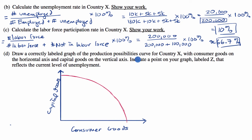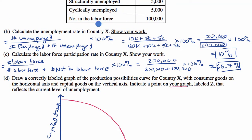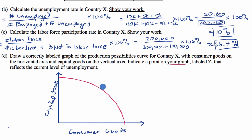They say indicate a point on your graph labeled Z that reflects the current level of unemployment. You might think you need to put it on the curve, but that would not be the case here — because we have some level of cyclical unemployment. We are producing below our potential, so that means we would be behind the production possibilities curve. Point Z should be placed somewhere behind the curve, and anywhere behind the curve would suffice to get credit.